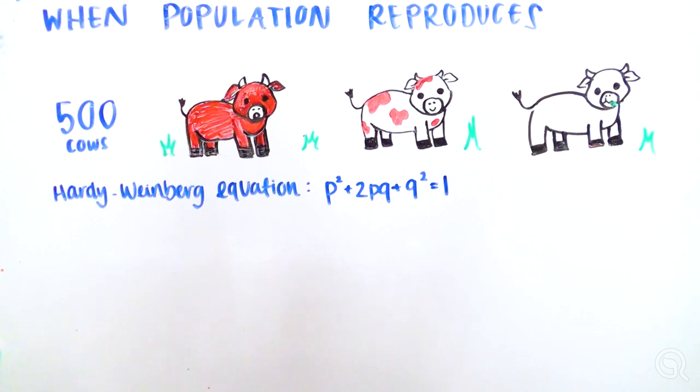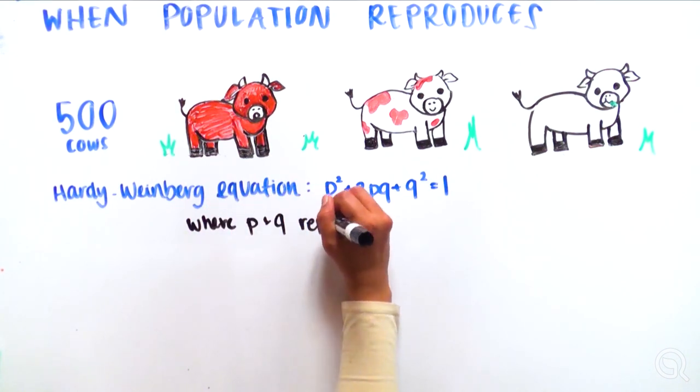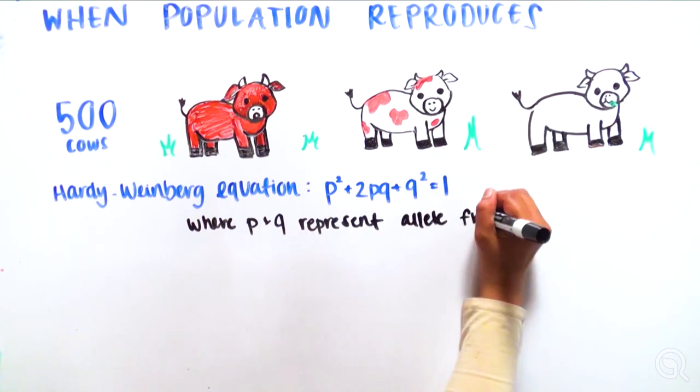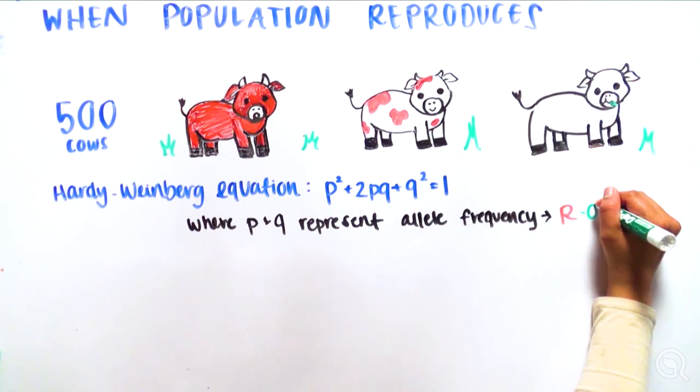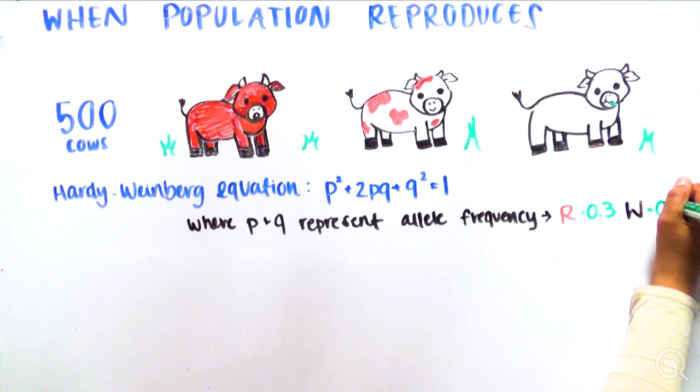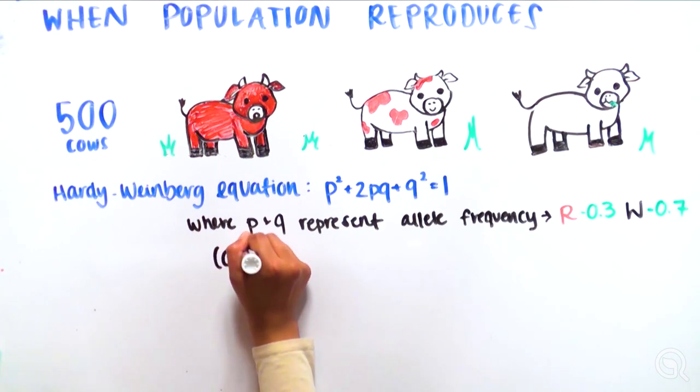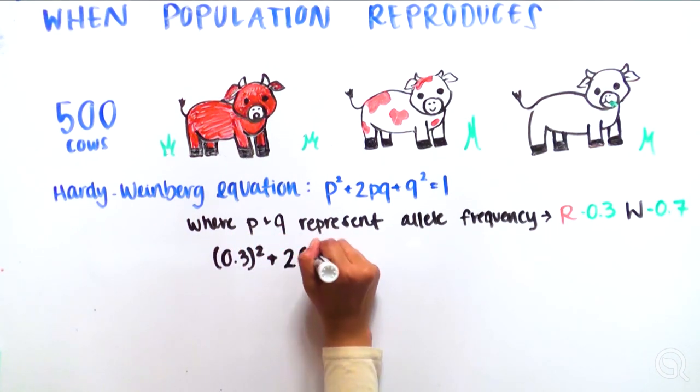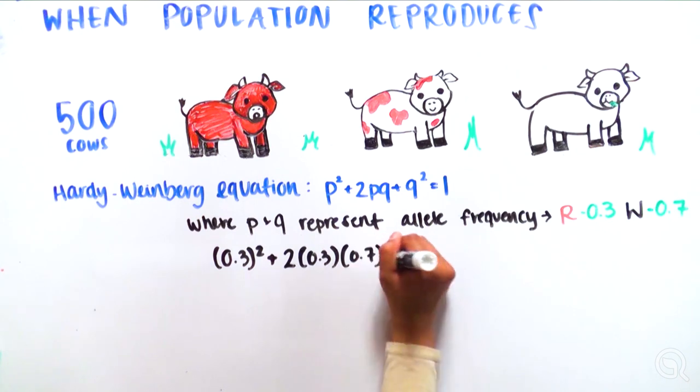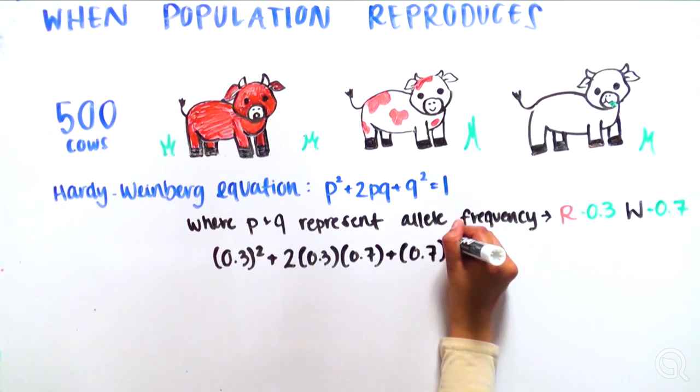we can use the Hardy-Weinberg equation, p squared plus 2pq plus q squared equals 1. In this equation, p is equal to the frequency of one allele, in our case R, and q is equal to the frequency of the other allele, in our case W. Substituting our allele frequencies we calculated before, we get 0.3 squared plus 2 times 0.3 times 0.7 plus 0.7 squared equals 1.